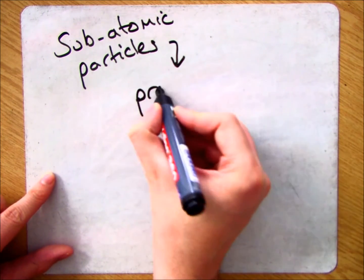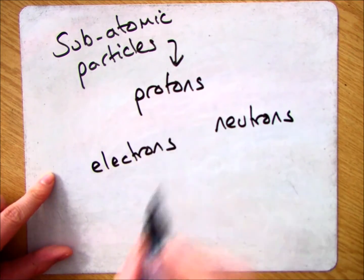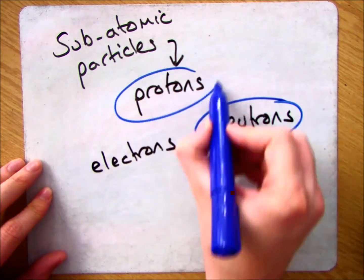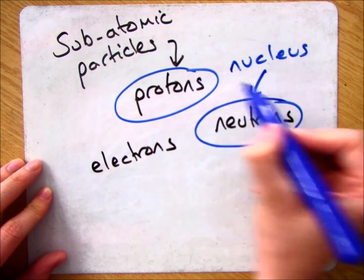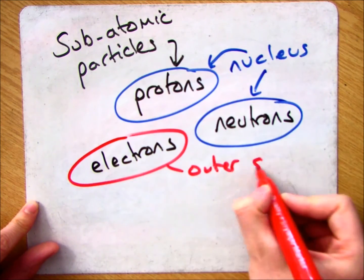They are the proton, the neutron, and the electron. The two subatomic particles in the nucleus are the protons and the neutrons, and then you have your electrons that go around in the electronic shells, for example the outer shell.